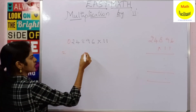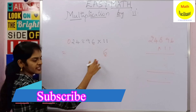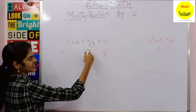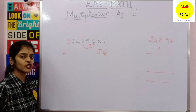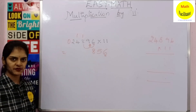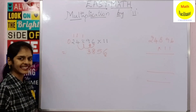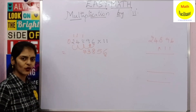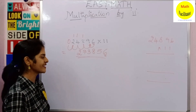Now for the answer: in the units place you simply write the same digit — 6. Then you add 6 to 9, which gives 15, so write 5 and carry 1. Next, 9 plus 8 is 17, plus 1 carried is 18 — write 8 and carry 1. Then 8 plus 4 is 12, plus 1 carried is 13 — write 3 and carry 1. Then 4 plus 2 is 6, plus 1 carried is 7. Finally, 2 plus 0 is 2.